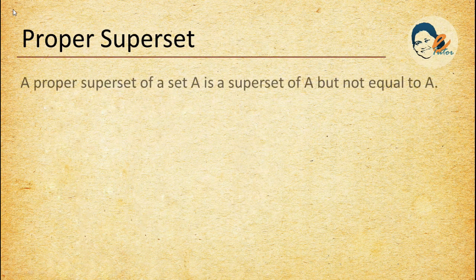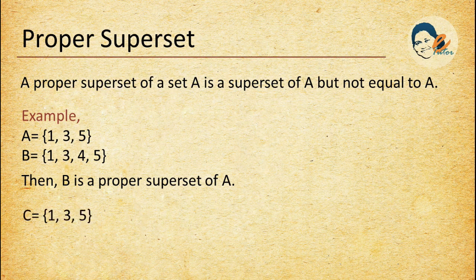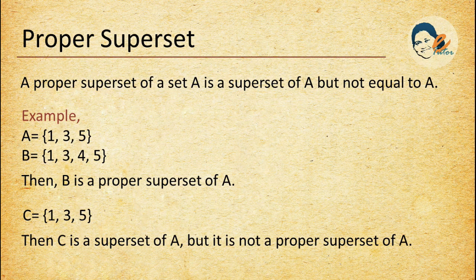Proper superset: a proper superset of set A is a superset of A but not equal to A. In other words, if B is a proper superset of A, then all elements of A are in B, but B contains at least one element that is not in A. Example: if A = {1, 3, 5} and B = {1, 3, 4, 5}, then B is a proper superset of A. If set C = {1, 3, 5} then C is a superset of A but not a proper superset of A, because C equals A. Set B has element 4 that set A doesn't have, that's why B is a proper superset of A.